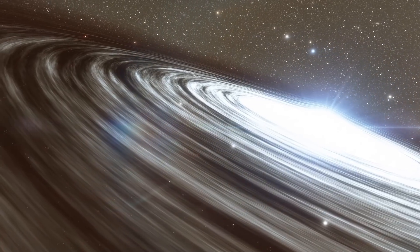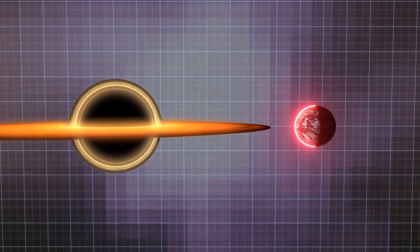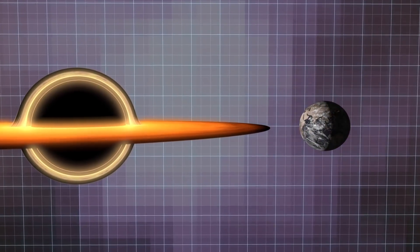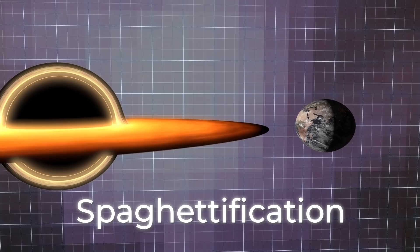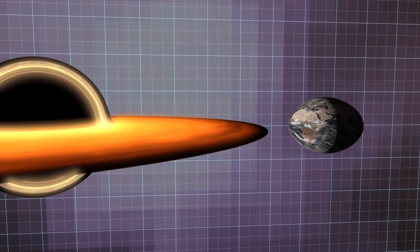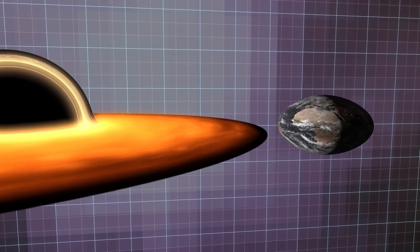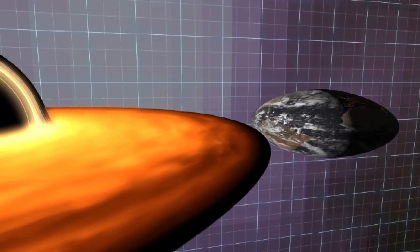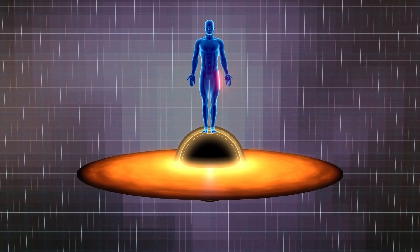Any black hole has an event horizon near which tidal forces are activated. But their effect is uneven—one side of the Earth would experience more gravity than the opposite. So-called spaghettification would begin. It's quite difficult to imagine this in the example of an entire planet, but it's easy if we talk about a person.